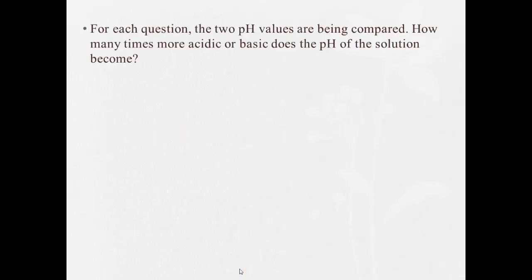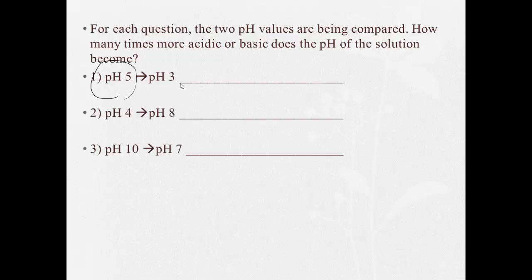Question time. For each question, we're going to be comparing two pH values. How many times more acidic or more basic does the pH of the solution become? So as we go from a pH of 5 to a pH of 3, is it becoming more acidic or less acidic? Or more basic or less basic? You can go either way. And how many times?